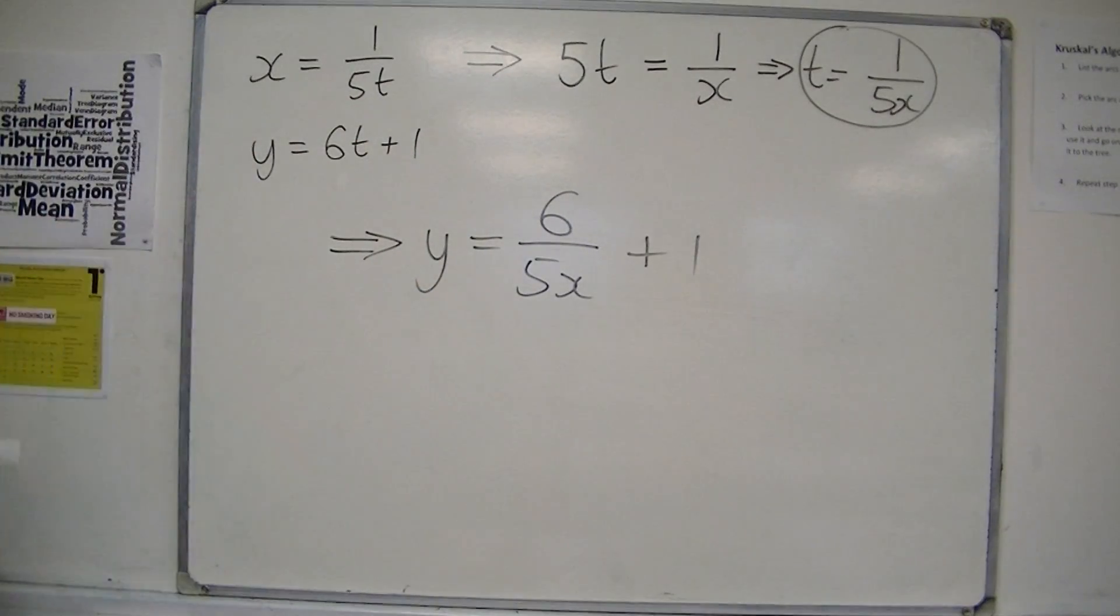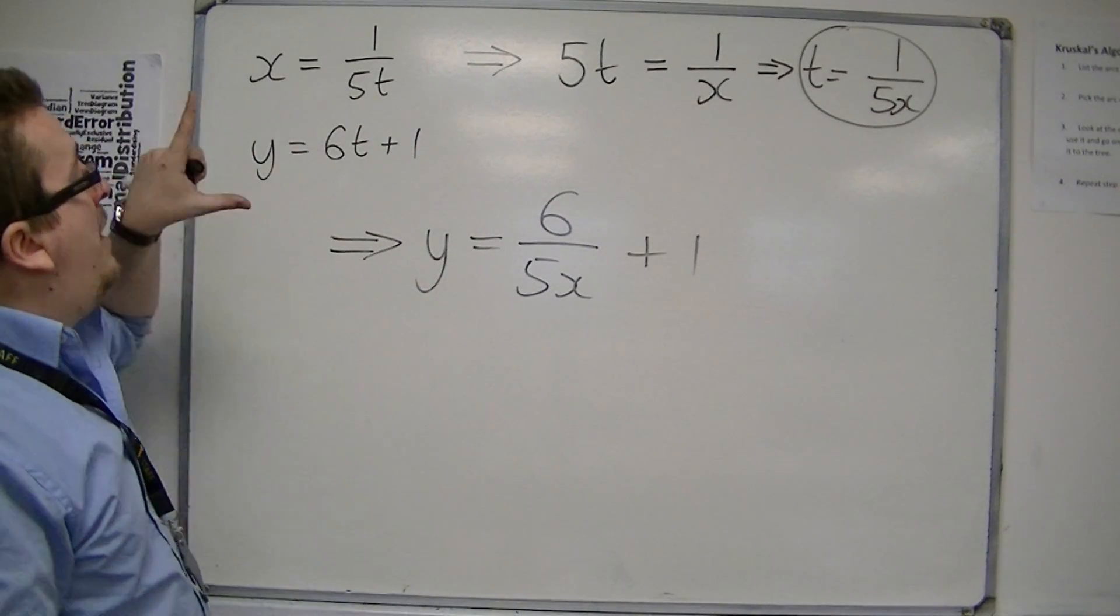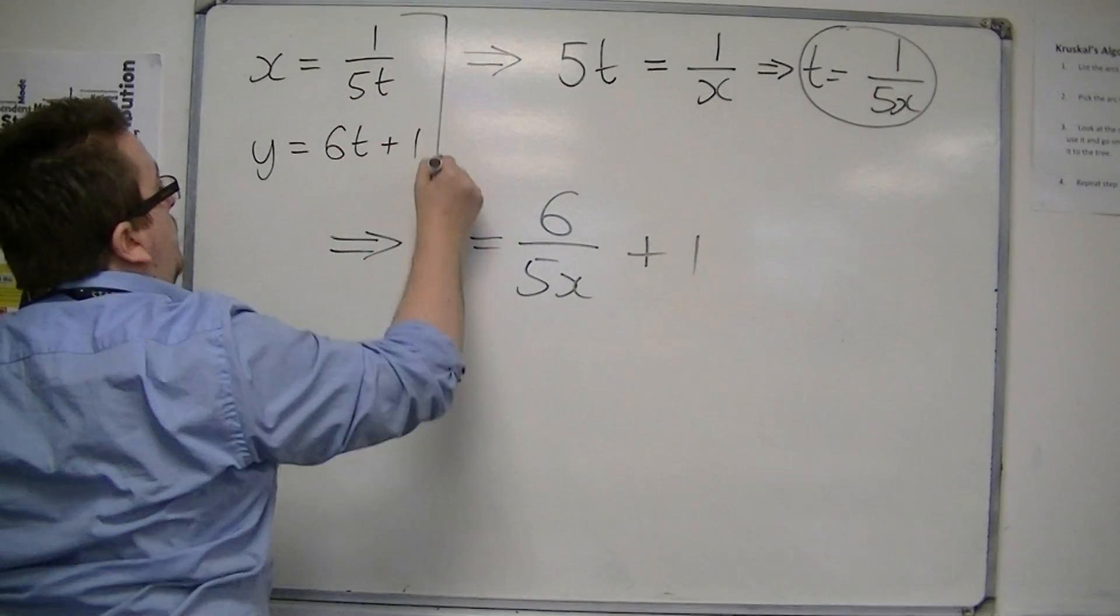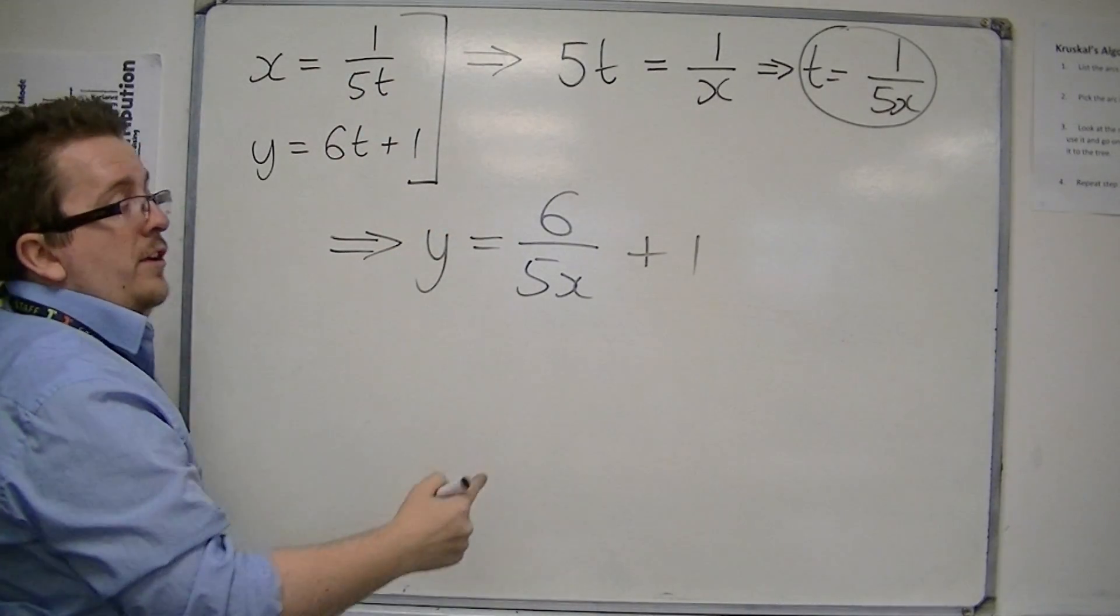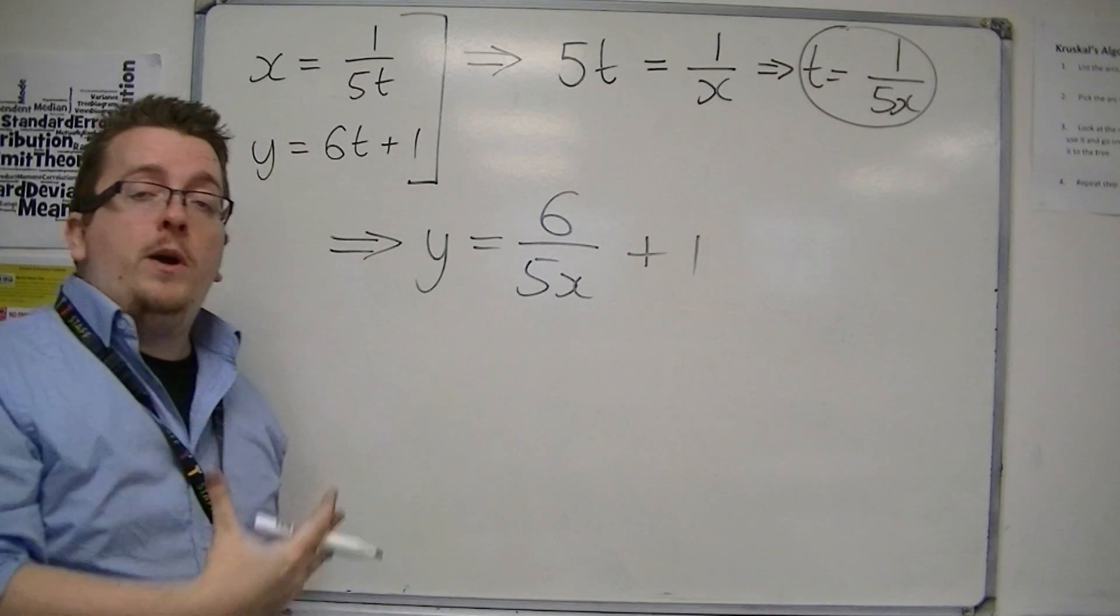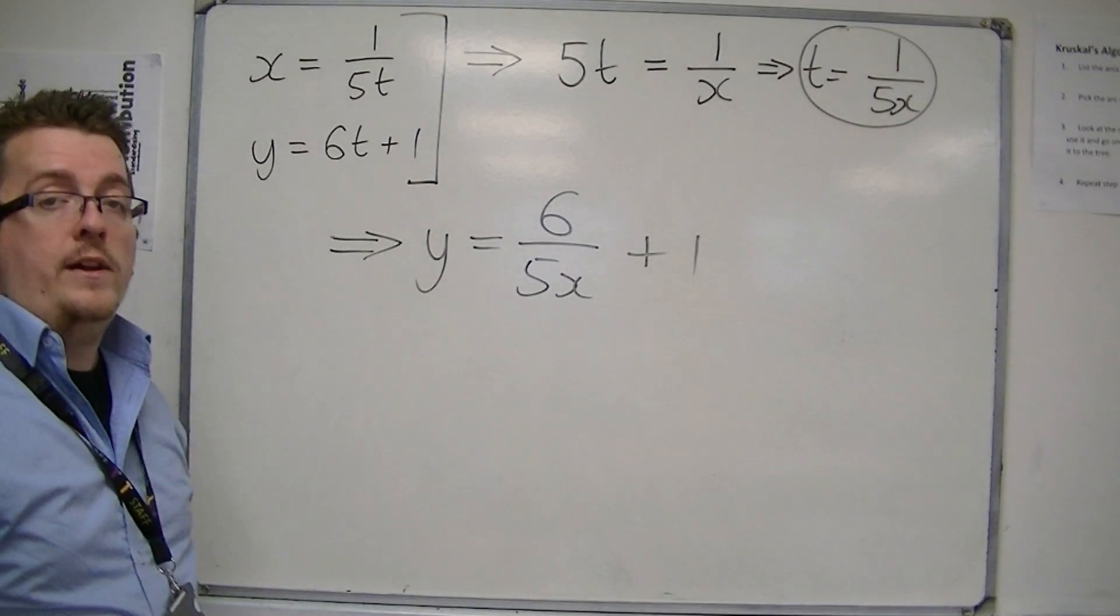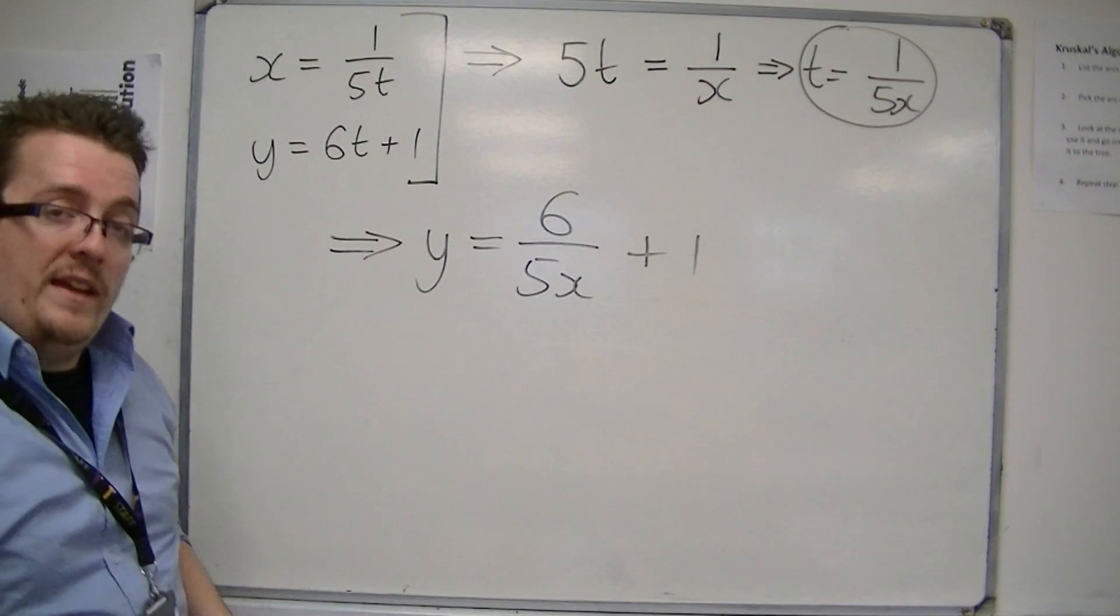And that's it. I've gone from the parametric equations, these two, and I've now converted it into a Cartesian equation. One Cartesian equation that just has x's and y's in it. And that's how easy it is.